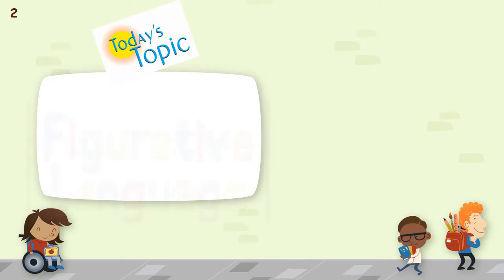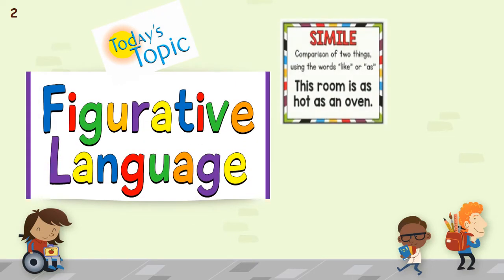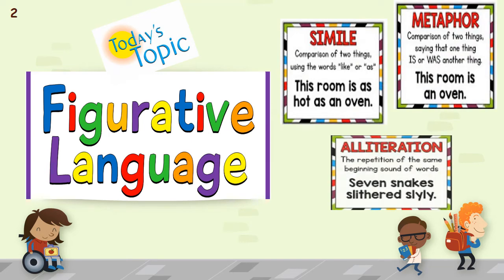Today's topic is figurative language, in which we're going to discuss simile, metaphor, and alliteration. Simile is a comparison of two things using the words 'like' or 'as' — for example, 'this room is as hot as an oven.' Metaphor is a comparison of two things saying that one thing is another — 'the room is an oven.' Alliteration is the repetition of the same beginning sound of words — 'seven snakes slithered slyly.' The sound 'S' is obvious here.